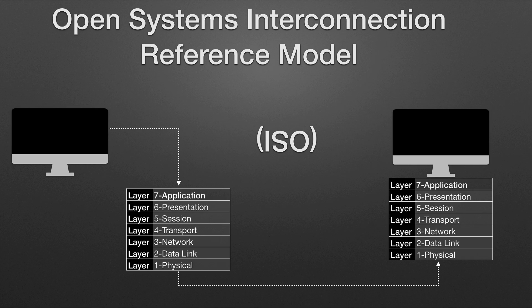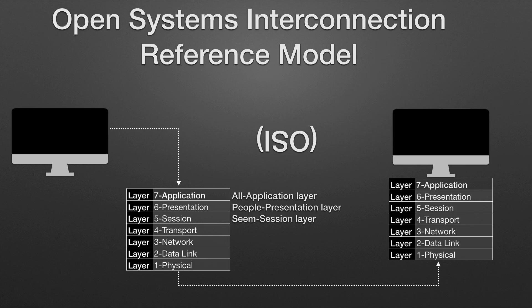Each layer is reasonably self-contained so that tasks assigned to each layer can be implemented independently. This enables solutions offered by one layer to be updated without adversely affecting the other layers. The seven layers are: Layer 7 Application, Layer 6 Presentation, Layer 5 Session, Layer 4 Transport, Layer 3 Network, Layer 2 Data Link, Layer 1 Physical. A handy way to remember the seven layers is the sentence: All People Seem To Need Data Processing, where each word's first letter corresponds to a layer.